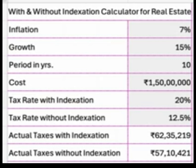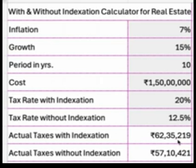Let's take a case with inflation at 7%, growth at 15%, holding period of 10 years, cost at 1.5 crores, taxation at 20%, and tax rate without indexation at 12.5%. The actual taxation with indexation works out to 62,35,000 after owning for 10 years. Without indexation, as is now the case, there is actually a benefit — it comes to 57,10,421.